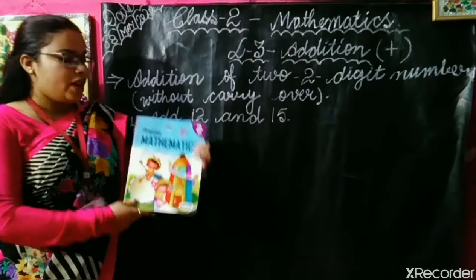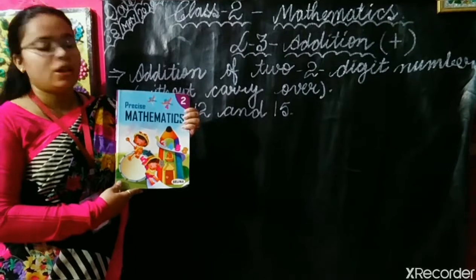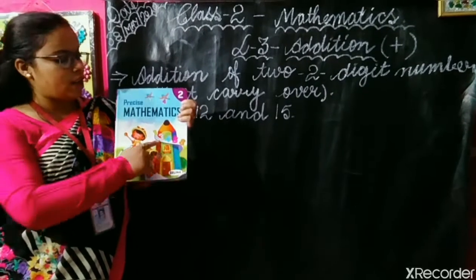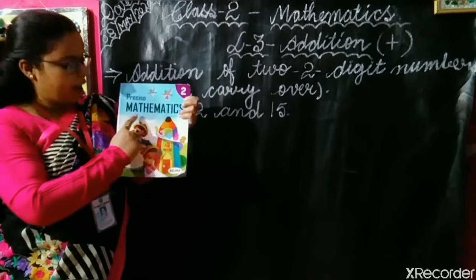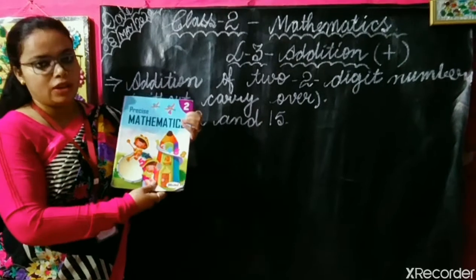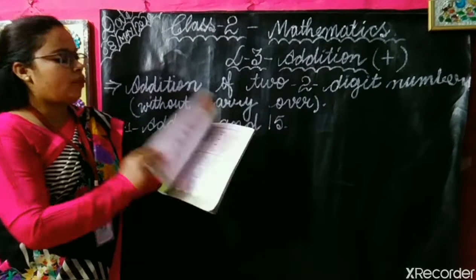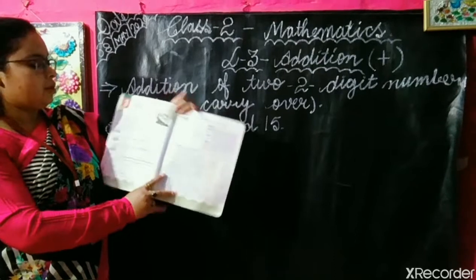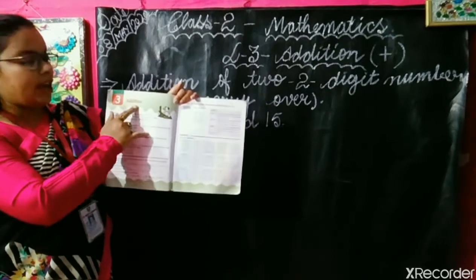Addition is plus. Hey, here children, have a look. This is your Maths book of class 2. Here you can see this is 2 and Mathematics is written. Your chapter is 3, Addition.